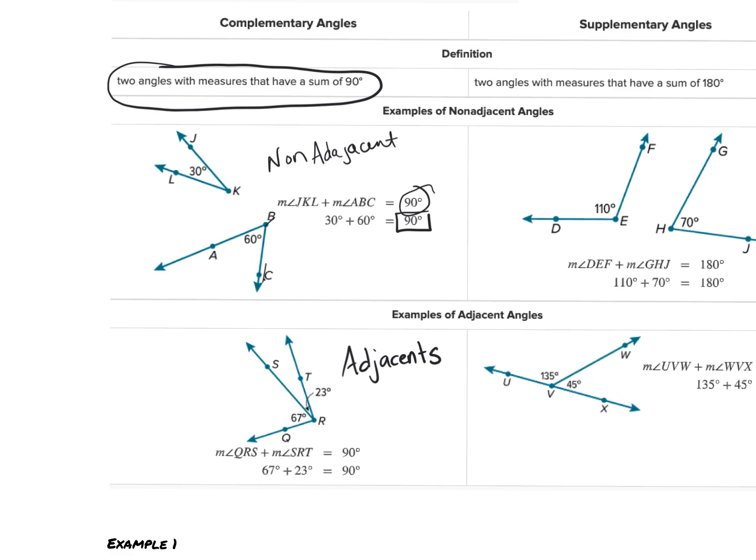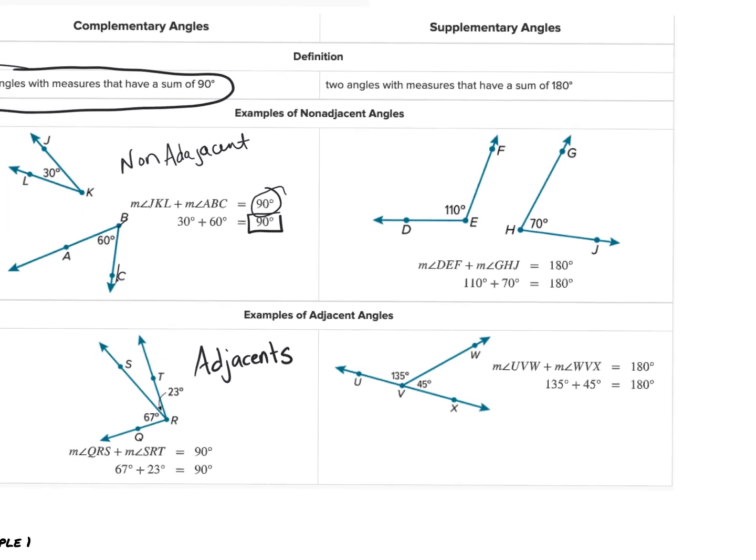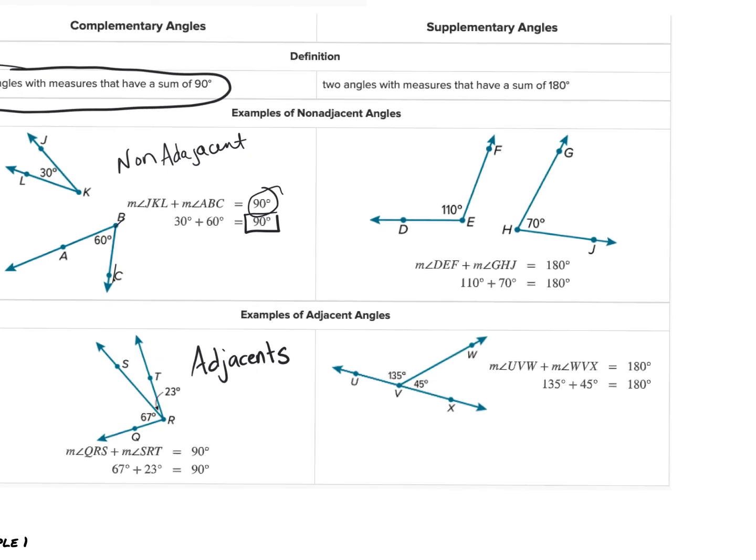Supplementary angles are similar in the sense that to be supplementary angles, they don't need to be adjacent. What they need to do is add to 180 degrees. Here we have 110 degrees for angle DEF and angle GHJ that is 70 degrees, and if I add those two together, I do get 180.